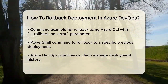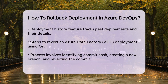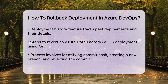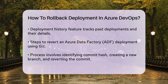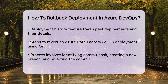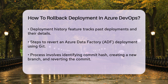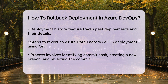Another approach is to use Azure DevOps pipelines to manage your deployments. Here, you can leverage the deployment history feature to track and revert deployments. The deployment history log lists all past deployments, including details like who performed the deployment, what items were deployed, and any notes added during the deployment process. This can be very helpful in identifying the exact deployment you want to roll back to.